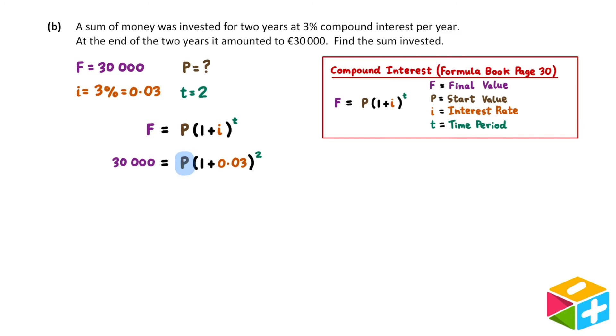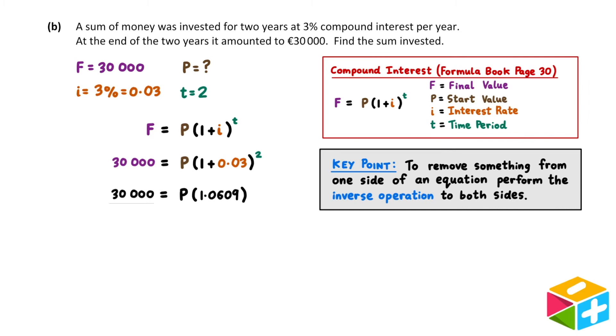We need to find the value of p, and unfortunately, our equation here doesn't give it to us directly, so we'll have to do some algebraic manipulation. A nice first step here is to simplify the 1 plus 0.03 squared. We can simply type this into our calculator. The most important thing to remember when solving equations like these is the following: to remove something from one side of the equation, perform the inverse operation to both sides.